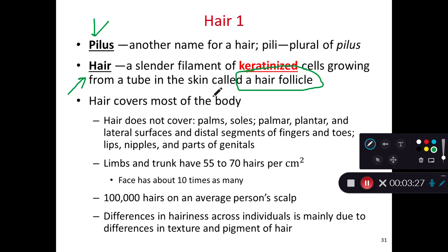Parts of our body that don't have hairs or hair follicles are going to be parts that need elevated friction for functional reasons. The most notable are the palm of your hands or the bottom of your feet — the plantar region. Palmar and plantar surfaces aren't going to have a lot of hair. Also, fingers and toes generally don't have a lot of hairs. The lateral surfaces of your fingers and toes are constantly rubbing against each other, and hair there would serve as an irritation or increased friction.